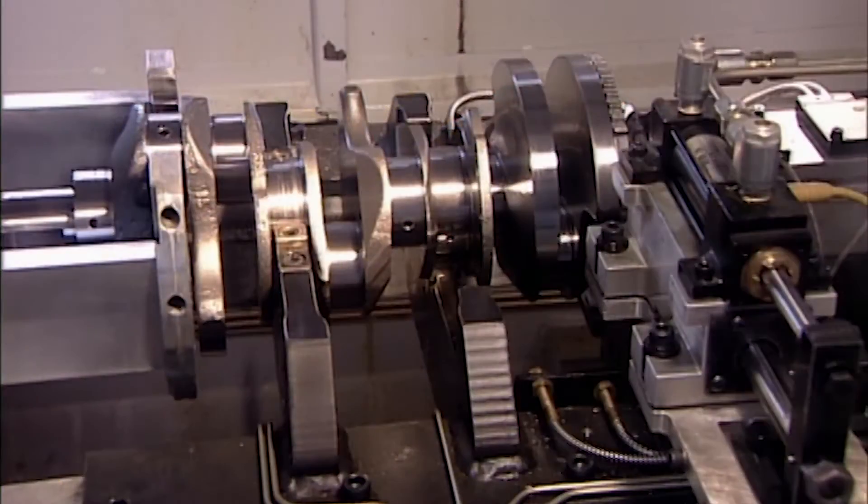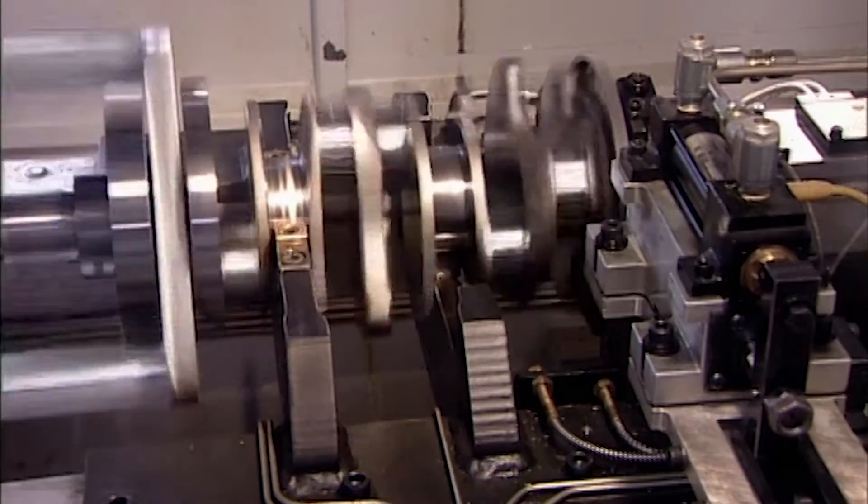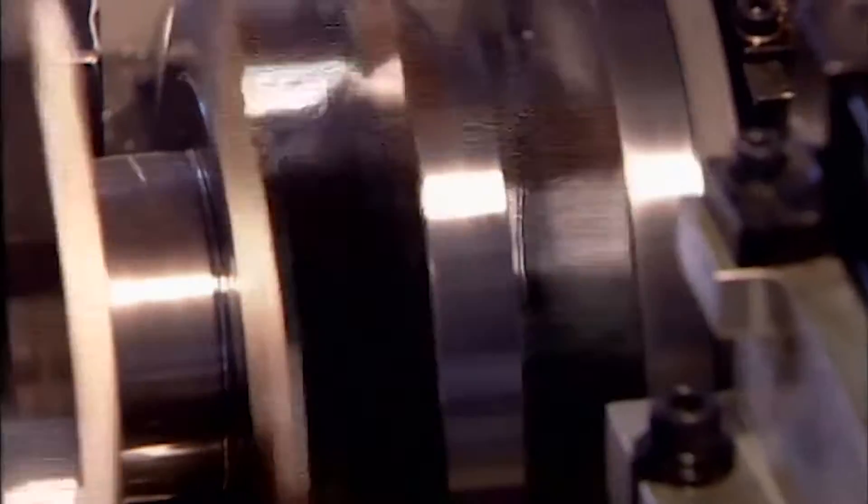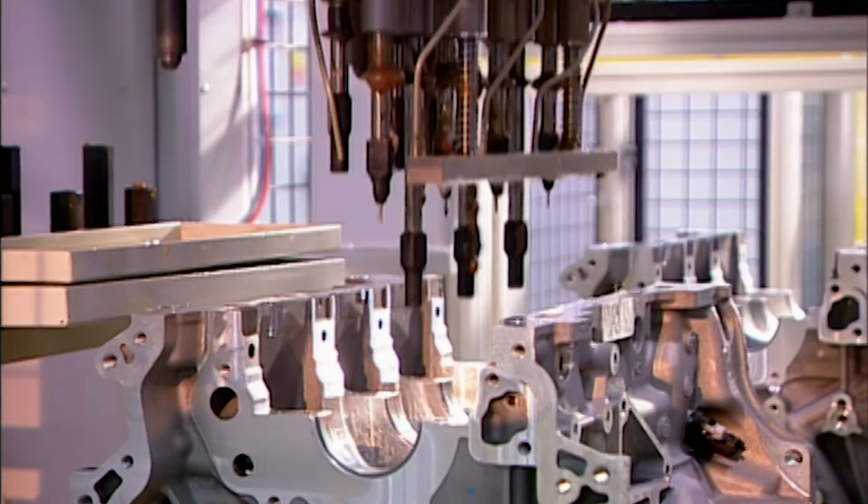Now workers balance the crankshaft. If it's off kilter, the engine will vibrate. A computer analyzes the spin and determines whether they need to drill out metal at certain points to achieve equilibrium.